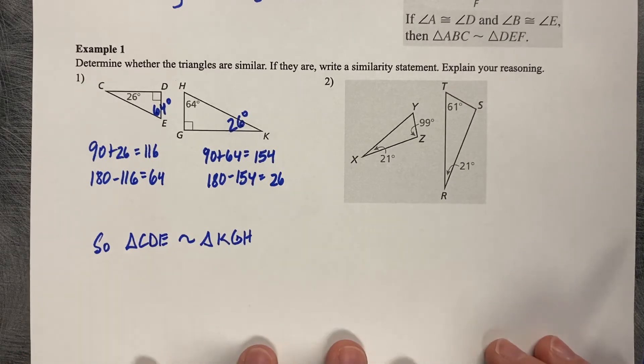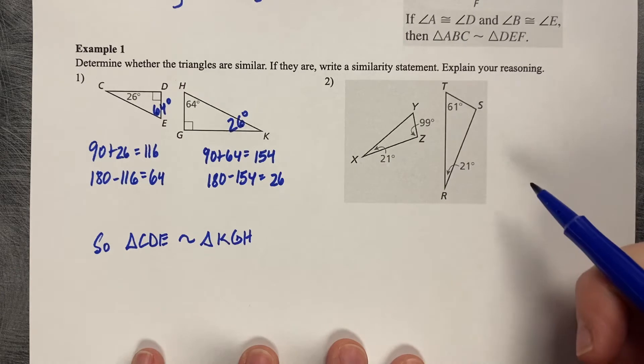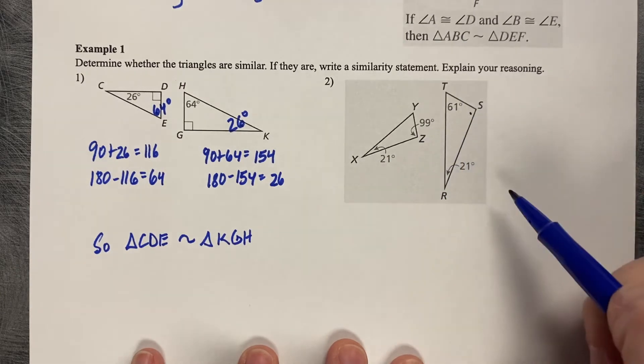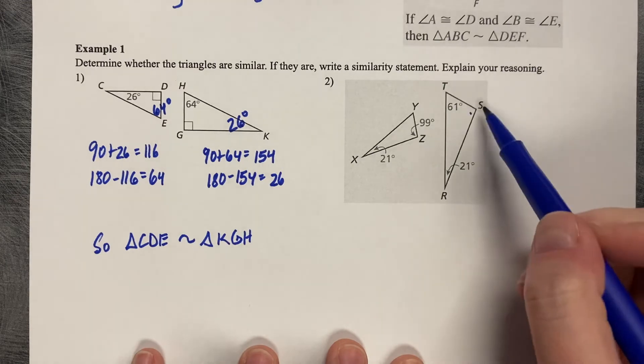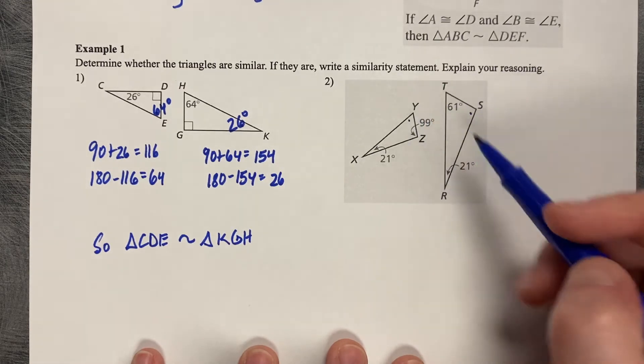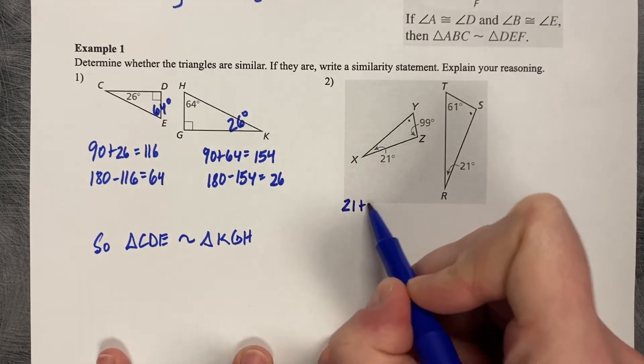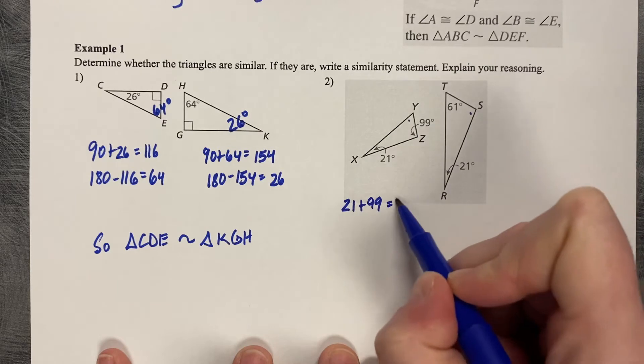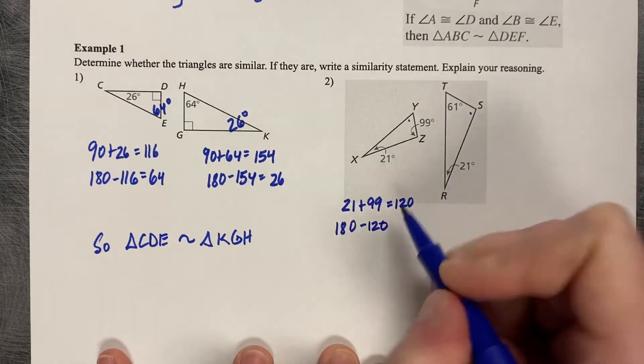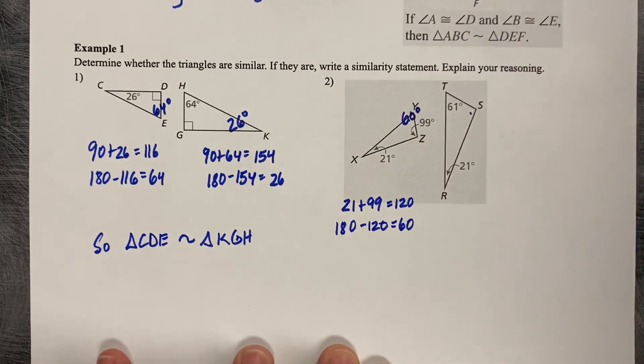All right, let's try the second one. So 21 and 99, 21 and 61. So the question is, does angle Z match angle S? We want to know if those are the same. So is angle S 99? Or is angle Y 61? So let's check. So 21 plus 99 is 120. 180 minus 120 is 60 degrees. So angle Y is 60 degrees.